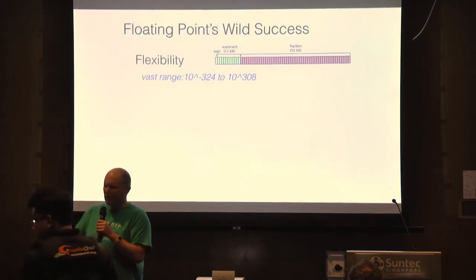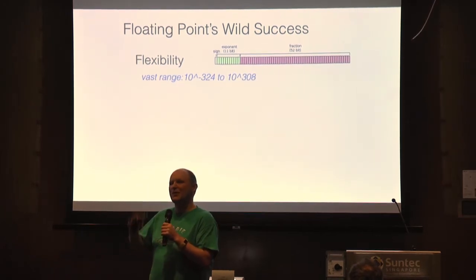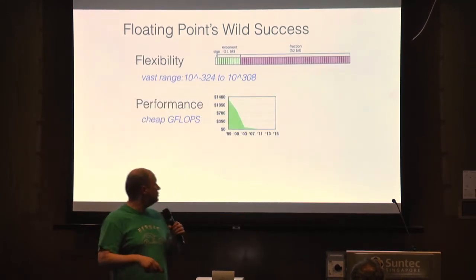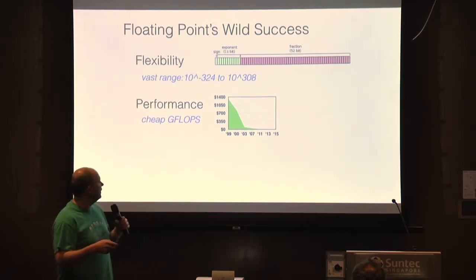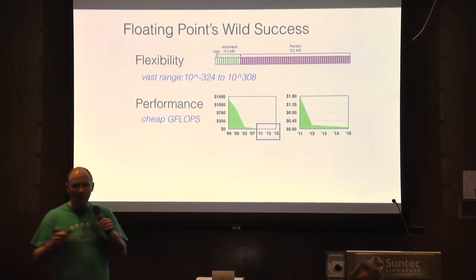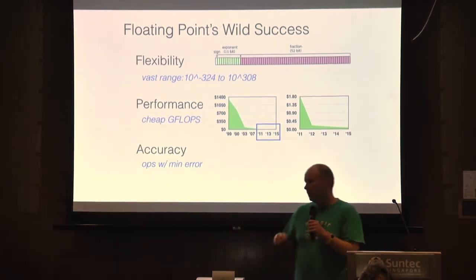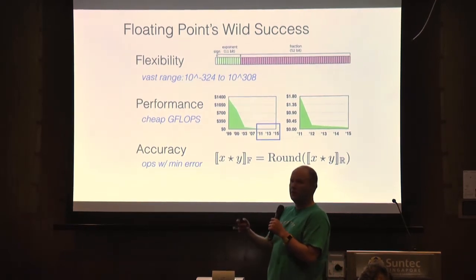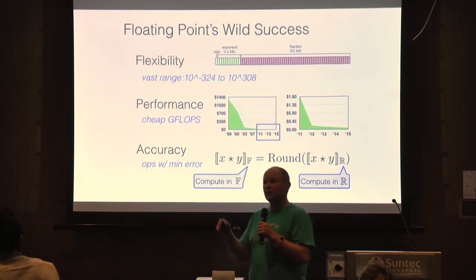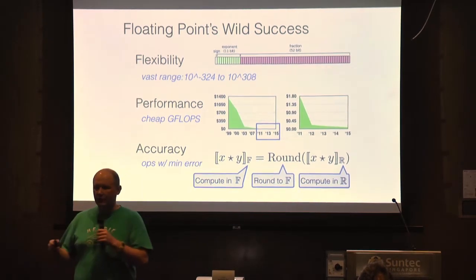Floating point has been a wild success in a lot of ways. It's worth acknowledging this because everybody for the whole conference is going to rip on it. But it does give you a huge dynamic range, which is useful. It's pretty cheap — floating point performance has kept dropping. Individual operations give you pretty good accuracy. A floating point op is basically as if you did an individual operation on the reals and then rounded, so you get a nice accuracy guarantee with the performance and the flexibility.